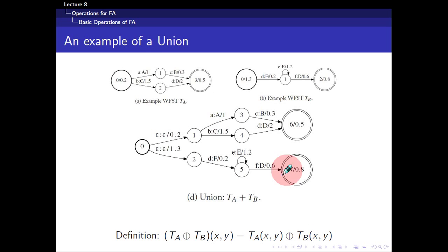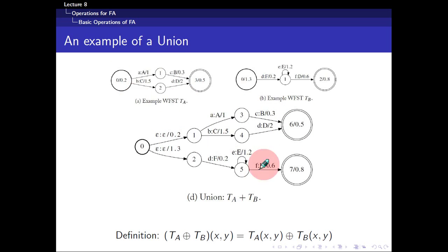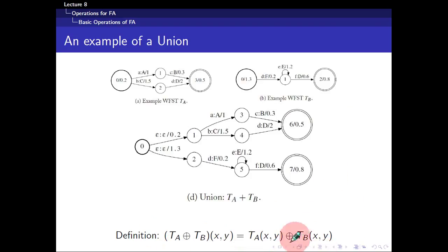The next operation is union — it combines transducers into a parallel arrangement. You take the first transducer and the second transducer and arrange them in parallel. You put a common initial node that branches out, and each branch inherits the initial weight of its respective transducer. Since you have two different outputs, you add them together to determine the weight.